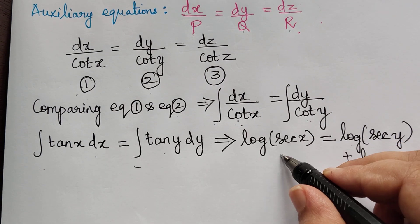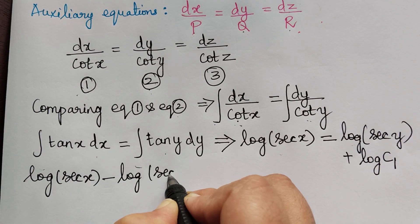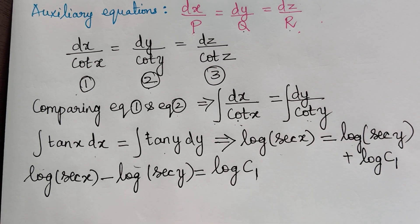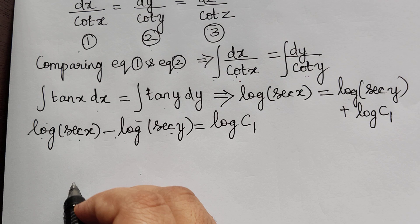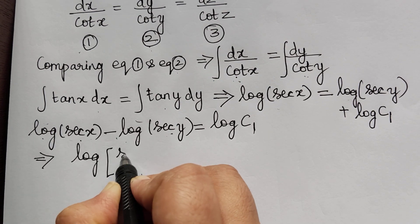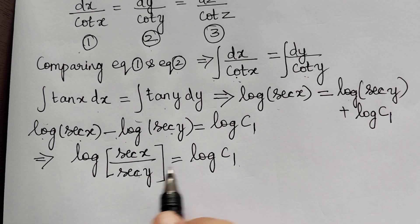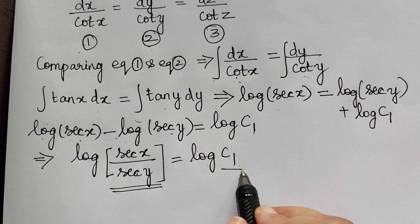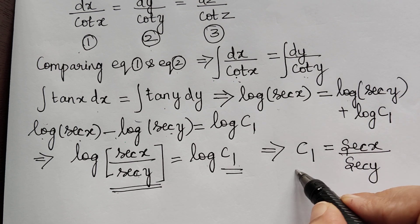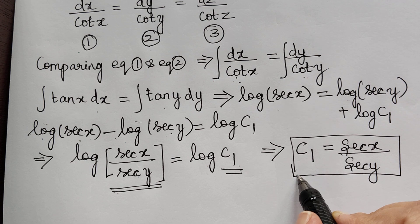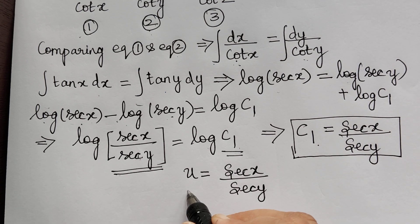So we get log(sec x) + log(c1) = log(sec y). Bringing log(sec y) to the left gives log(sec x) − log(sec y) = log(c1). Using the logarithm rule log(a) − log(b) = log(a/b), we get log(sec x / sec y) = log(c1), and therefore sec x / sec y = c1. So the first solution is u = sec x / sec y.